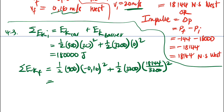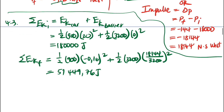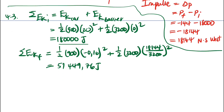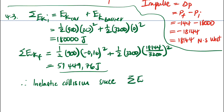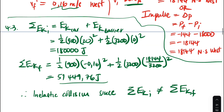The total kinetic energy after the collision is approximately 51,449.76 joules. The total kinetic energy before was 180,000 joules and after it was approximately 51,449.76 joules. Therefore, since the total kinetic energy before is not equal to the total kinetic energy after, this is an inelastic collision.